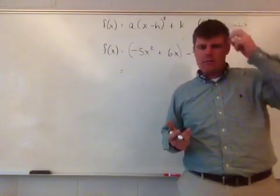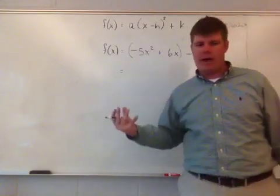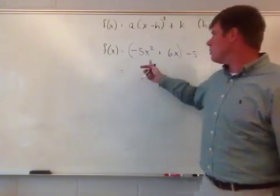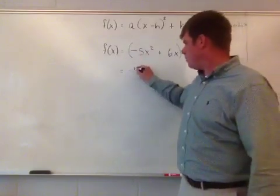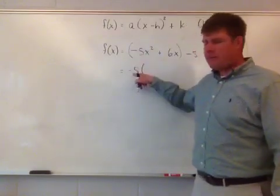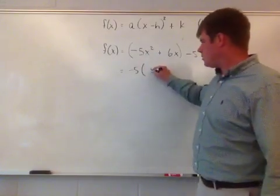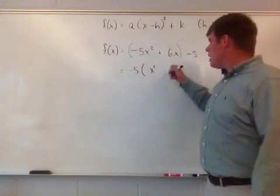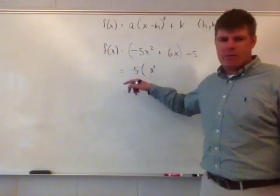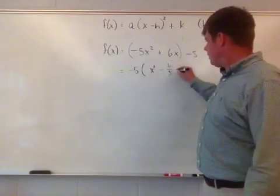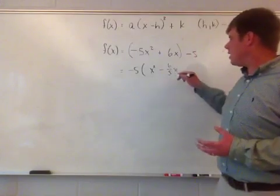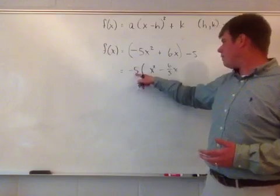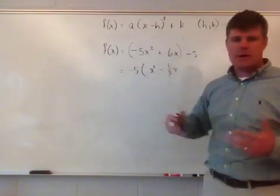When you factor something out, you divide each term by that value — what's left goes inside the parentheses, and the divided value goes outside. Factoring out negative 5: negative 5 divided by negative 5 is 1, giving x squared. Then 6 divided by negative 5 is negative 6 fifths, so that term becomes negative 6 fifths times x. You can verify: negative times negative gives positive, and 5 divided by 5 is 1, so 1 times 6 gives that 6x.